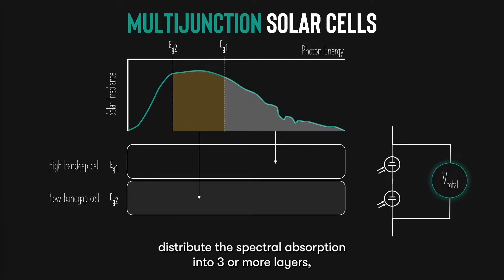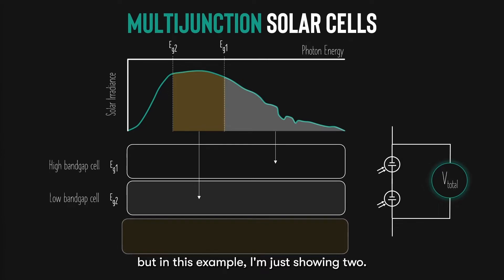Of course, we can distribute the spectral absorption into three or more layers. But in this example, I'm just showing two. Most multi-junction solar cells, at most, have only up to three different absorber layers.